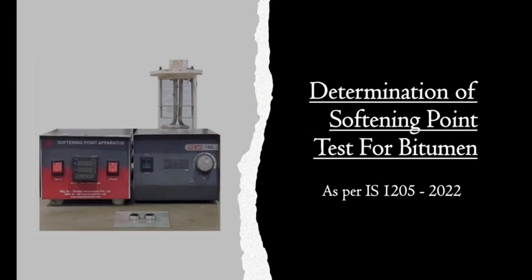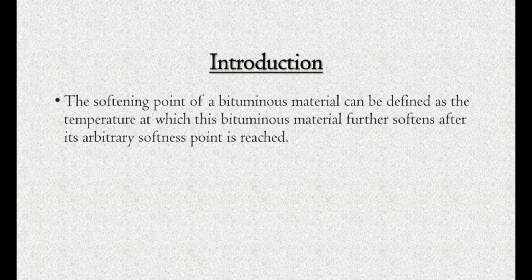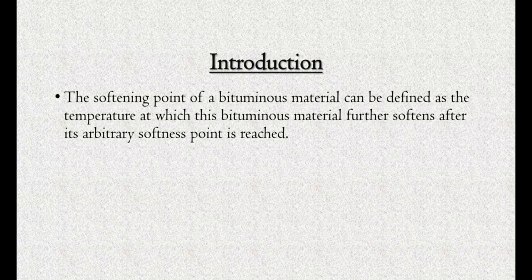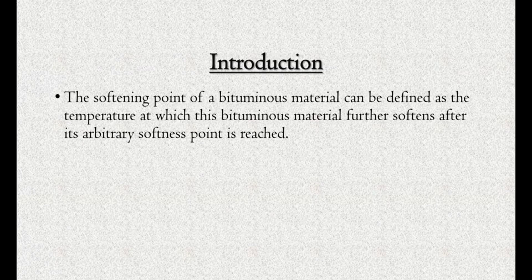Determination of softening point test for bitumen as per IS 1205-2022. The softening point of a bituminous material can be defined as the temperature at which this bituminous material undergoes further softening after its arbitrary softness point is reached.